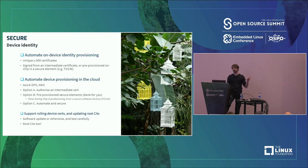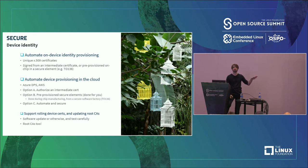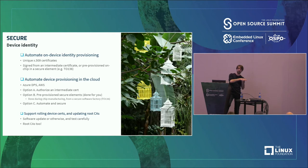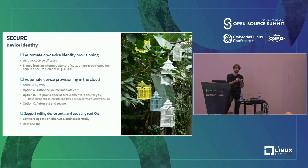Once you have that device certificate, push it to the cloud. For Azure, DPS makes it very easy to authorize all devices that fall within certain intermediate certificates. For AWS, you can do similar things using a Lambda function. Either authorize an intermediate certificate, pre-provision using a third party, or do it yourself with automation. Make sure you support rolling device certificates and updating root CAs, as root CAs have a relatively long lifespan but do eventually expire.